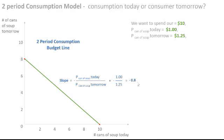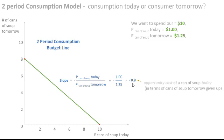This number is very important. What it's doing is it tells us the opportunity cost of soup today. In other words, for every can of soup we purchase today we are giving up 0.8 cans of soup in the future. This is the basis of the two-period consumption model.